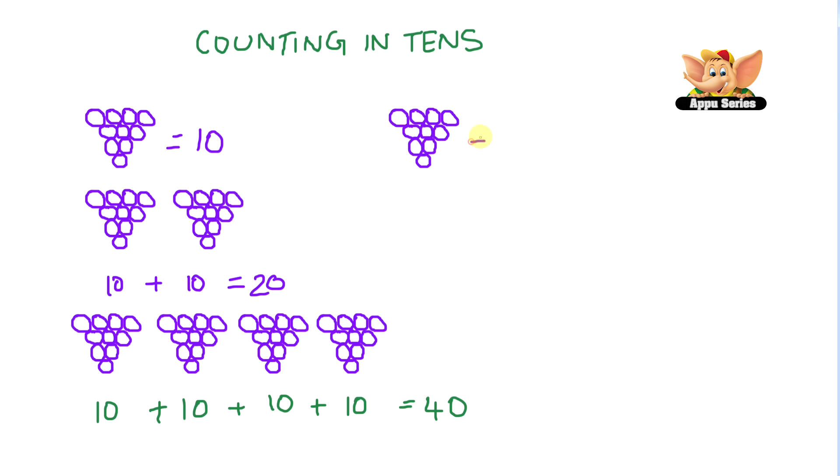Now tell me how much is this? We have one group and three single grapes. One group is one ten and three single grapes. So that's ten plus three equals thirteen.